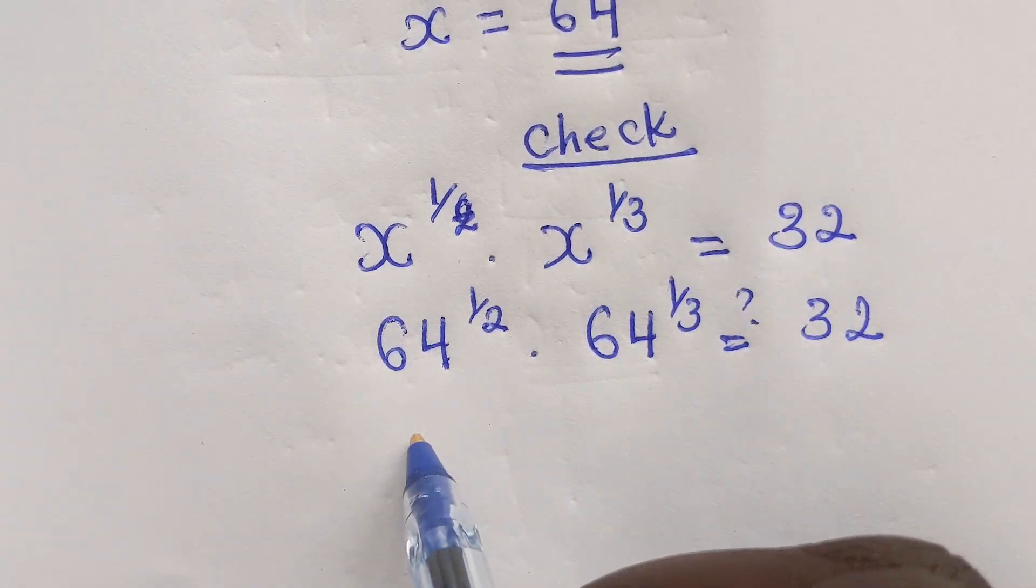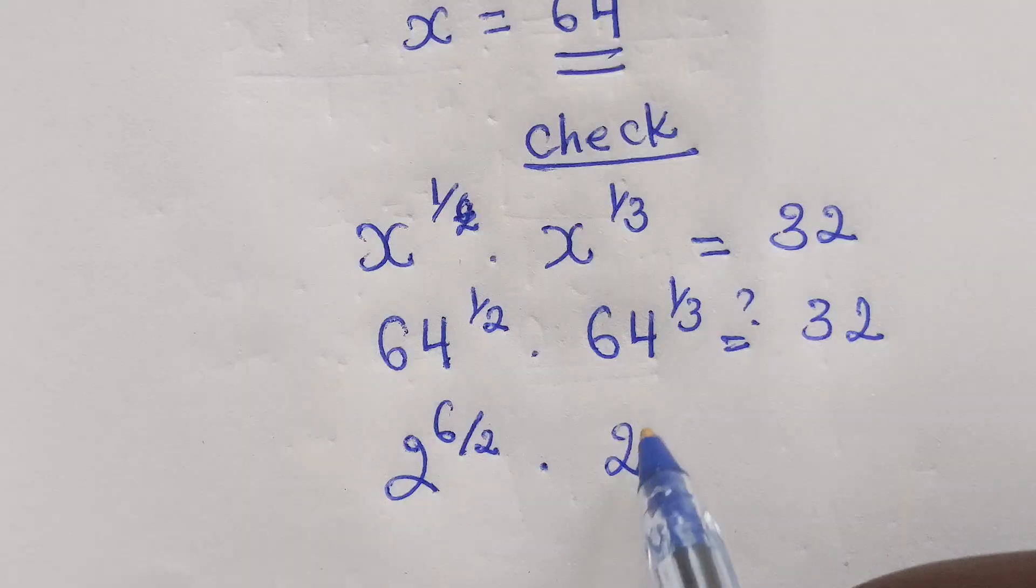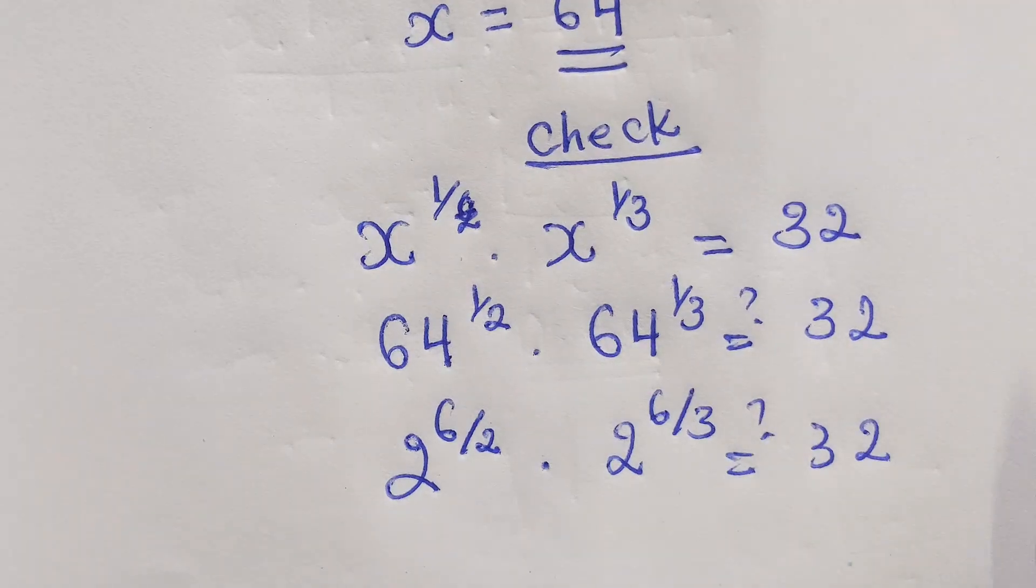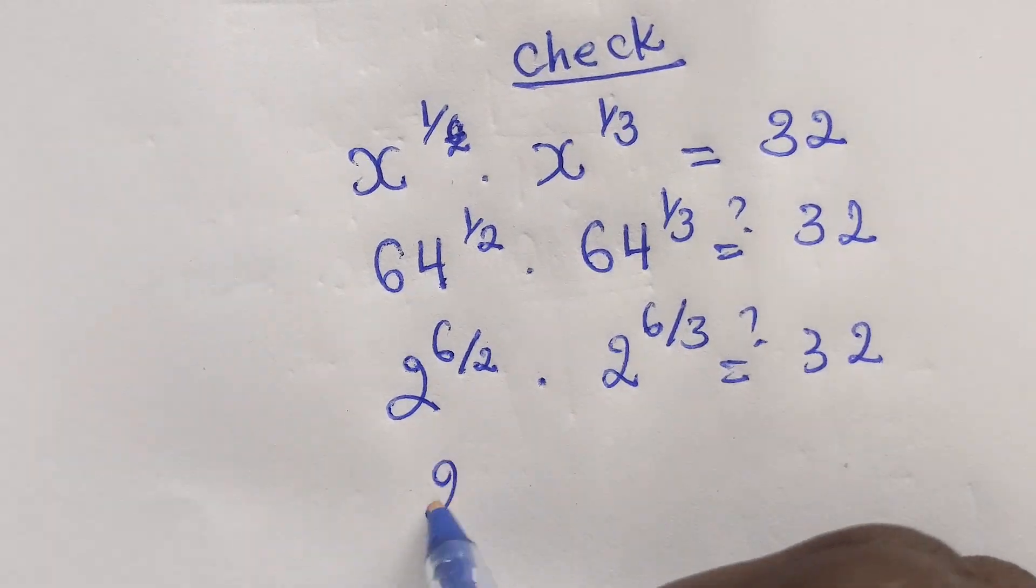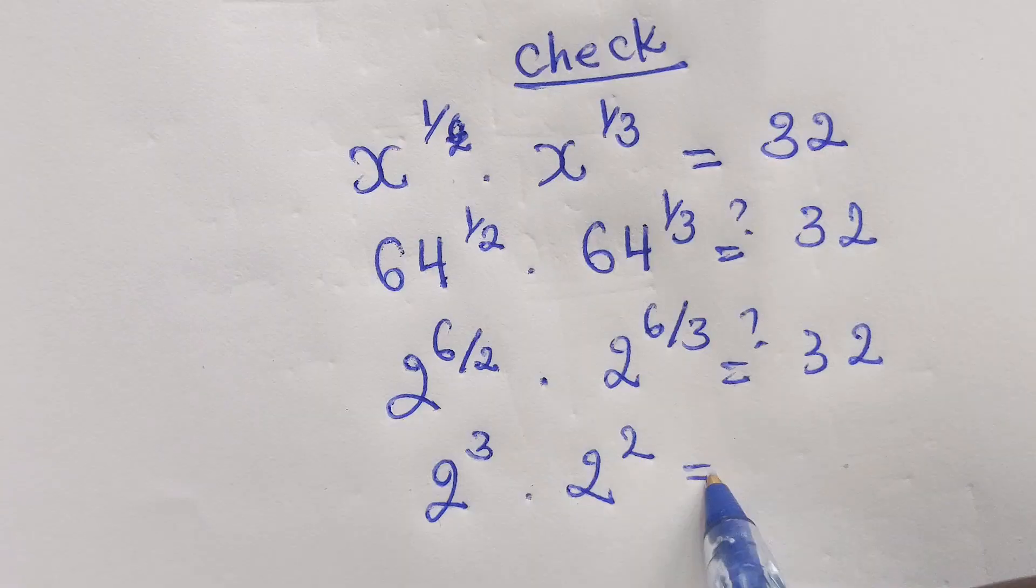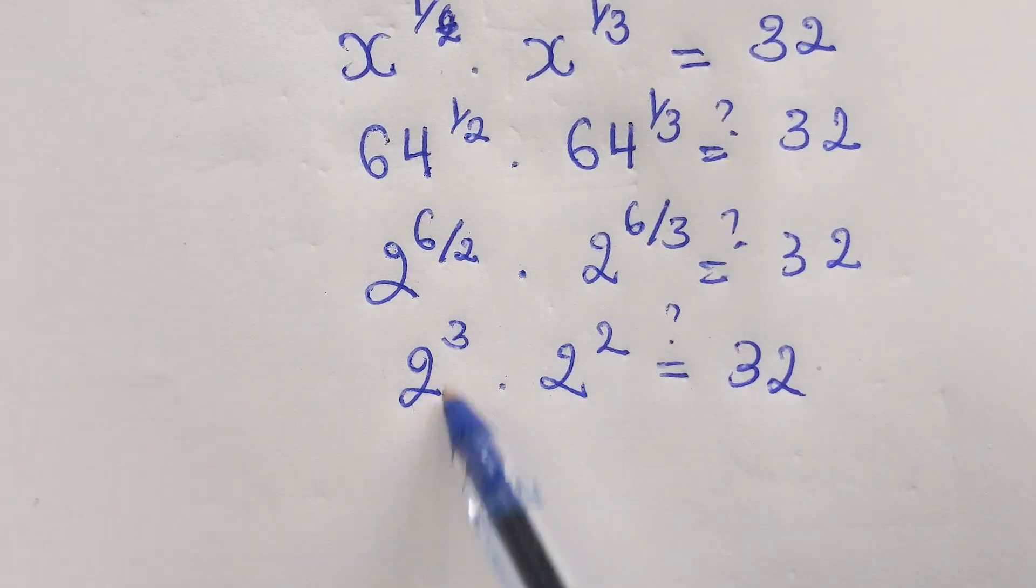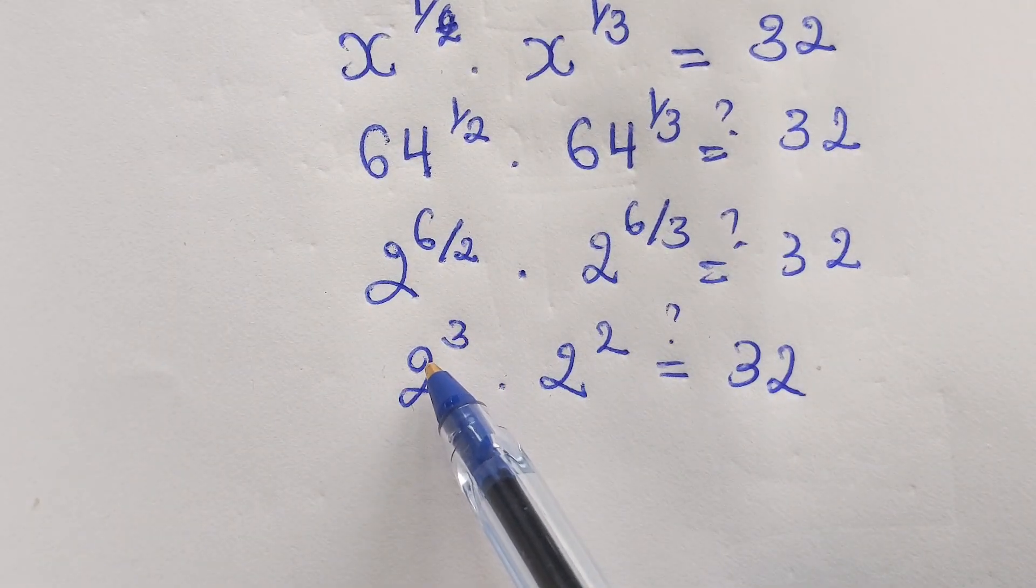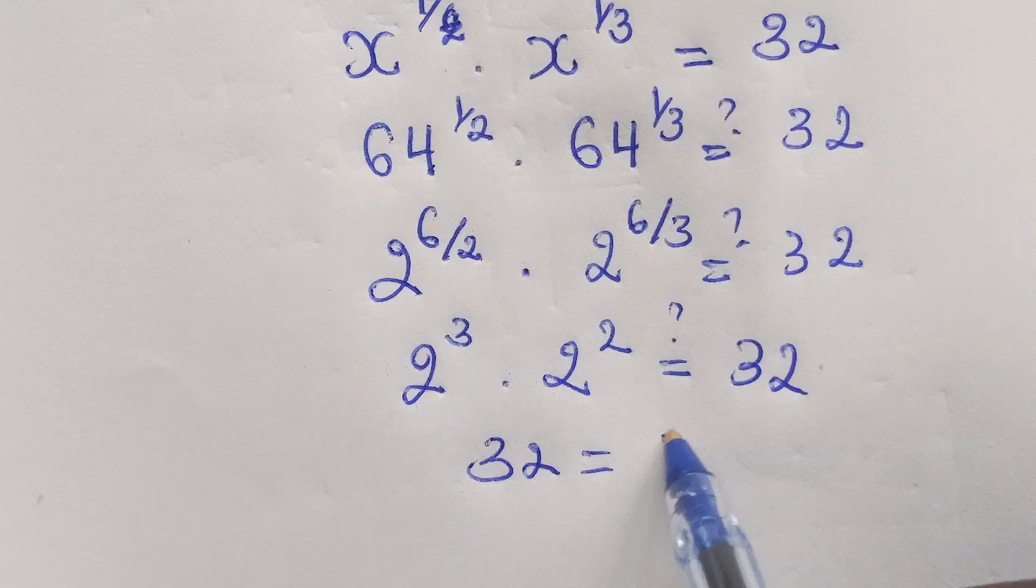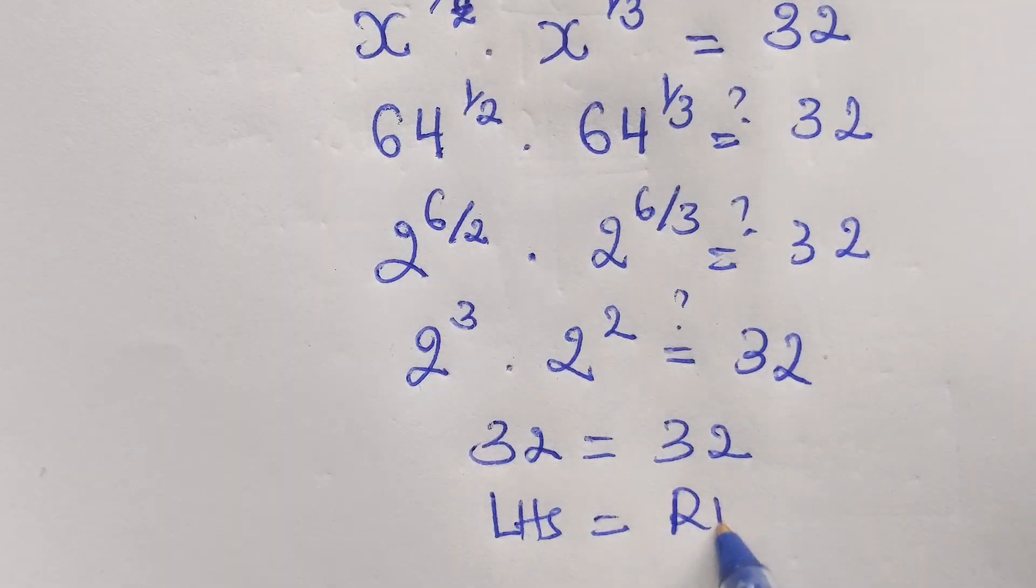64 equal to 2 power 6 divided by 2 times 2 power 6 divided by 3 equal to 32. Question mark. This is 2 power 3 is equal to 8 times 2 power 2 equal to 32. Left-hand side equal to right-hand side.